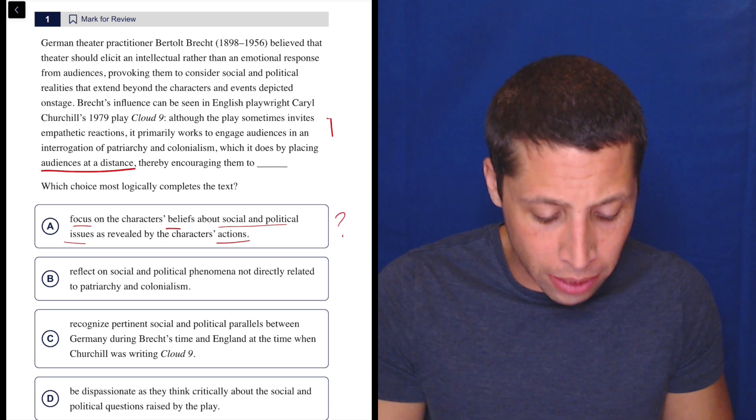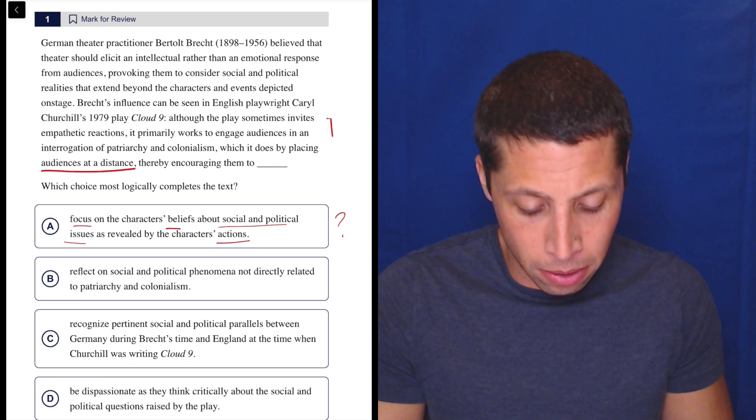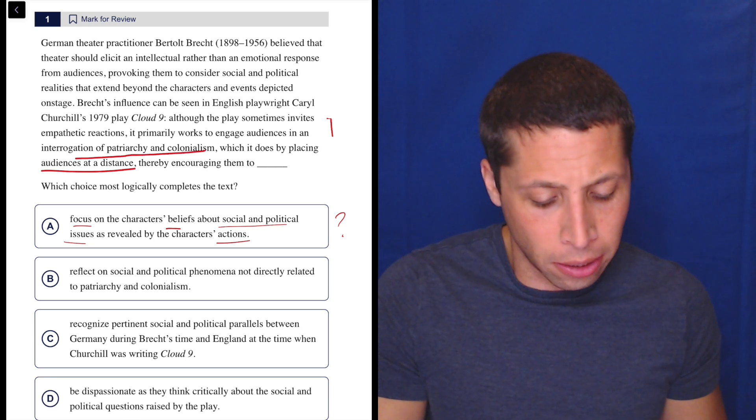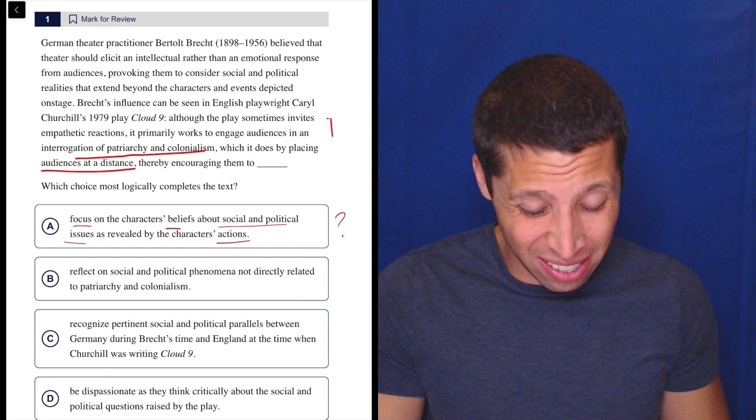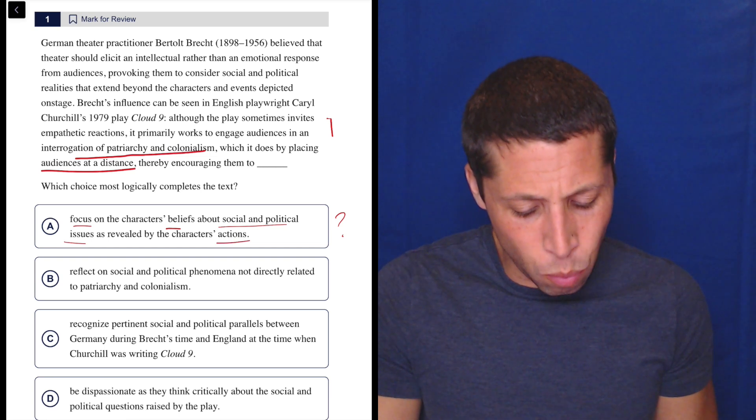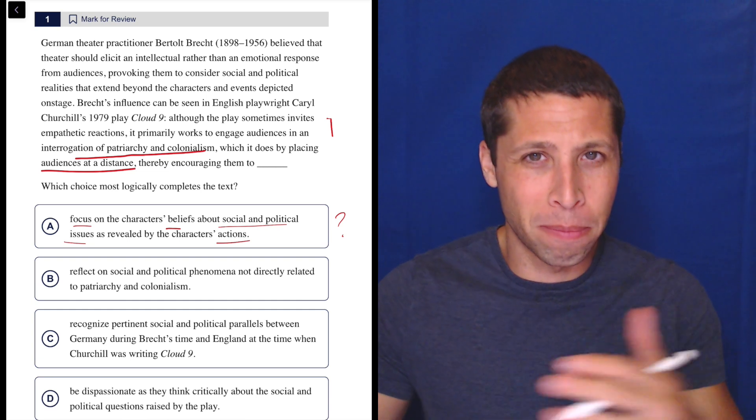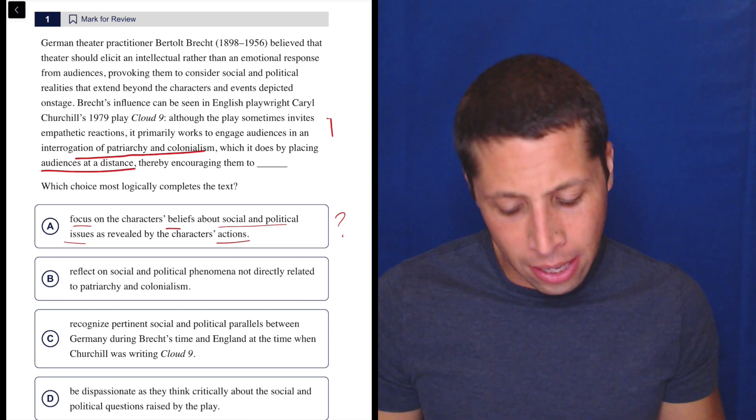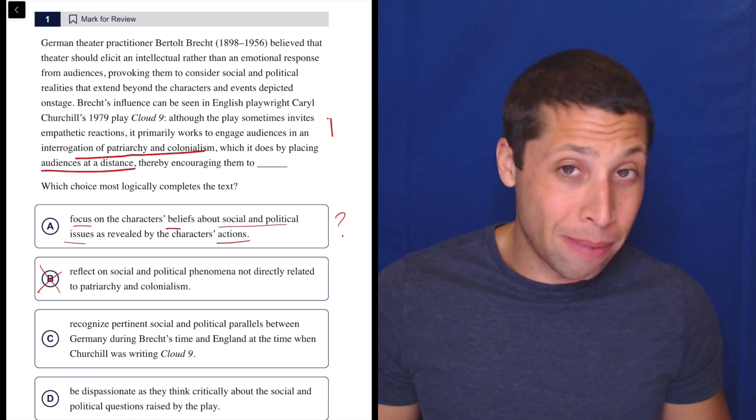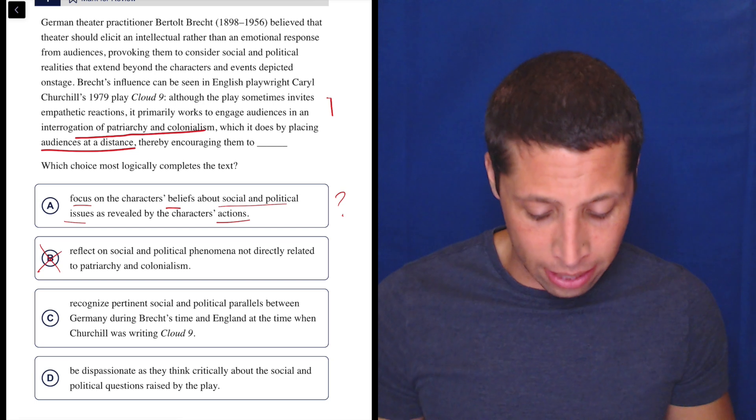B, reflect on social and political phenomena not directly related to patriarchy and colonialism. Well, why would we do that? It's an interrogation of patriarchy and colonialism. And then are we supposed to be at a distance from those things? It seems odd that we would want to make a play that's about patriarchy and colonialism, but then it's not. That seems strange. So I don't love this choice. I guess I'd get rid of it, but I barely understand it. Maybe that's a sign I'm getting rid of it, is if it doesn't make any sense, not a good sign.